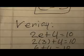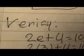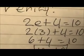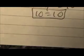For the verification, she rewrote the equation. And since the variable was 3, we would replace the variable with 3, and we get plus 4 equals 10. 6 plus 4 equals 10. And 10 equals 10.